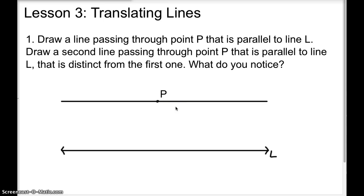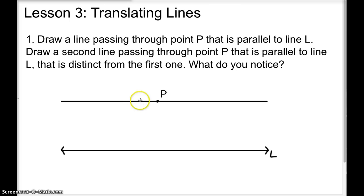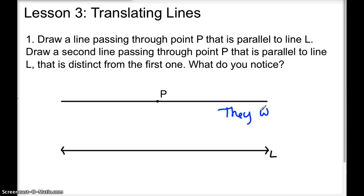The second thing it asks is to draw a second line through point P that is parallel to line L but distinct from the first one. If you draw another parallel line through point P, it's going to be the same line. So what we notice is that they would be the same line.